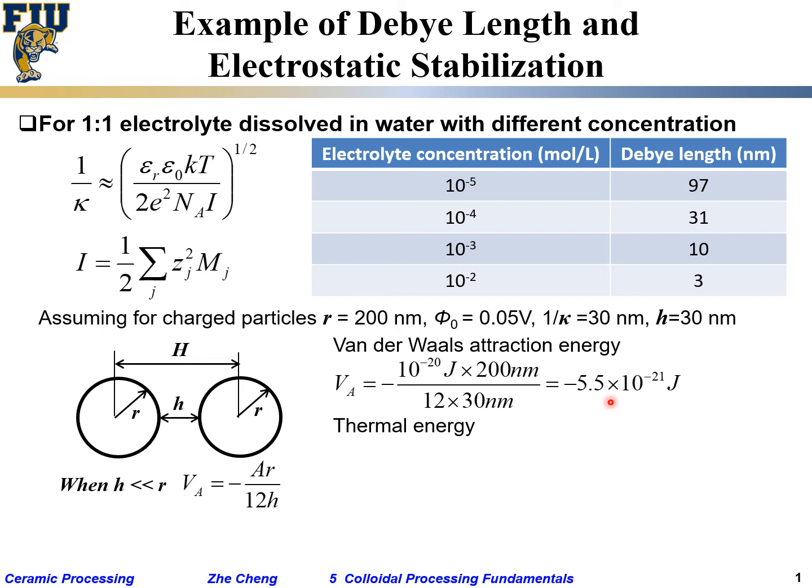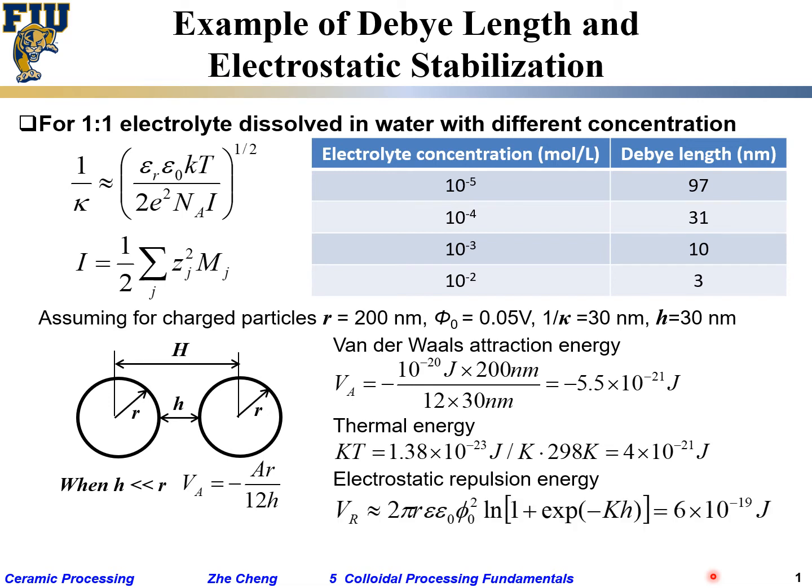The thermal energy, as we mentioned last time, is roughly on the order of kT at ambient temperature. You get this number for Van der Waals attractive energy and thermal activation or thermal knocking kinetic energy. Then electrostatic repulsion energy—of course we probably used the relationship that we said before.